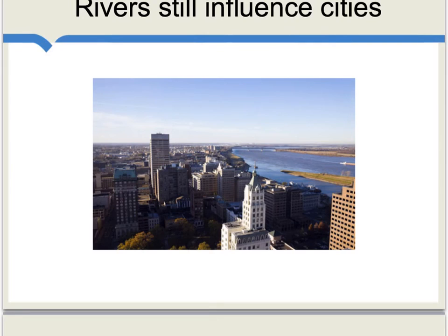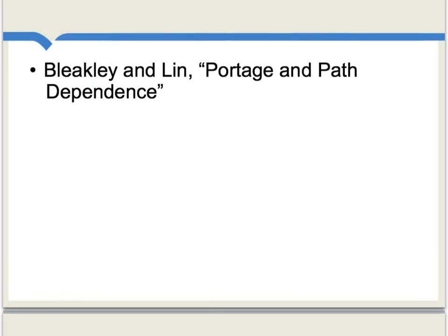In other areas of urban history, we find examples where that initial nudge really seems to matter and its importance persists. Memphis became a major American city at first because of its location on the Mississippi River. That location is no longer so important, but Memphis remains important as a city in Tennessee to this day, in part because it had such a significant early head start. On these nudge effects for cities, you should read Bleakley and Lynn, 'Portage and Path Dependence.'